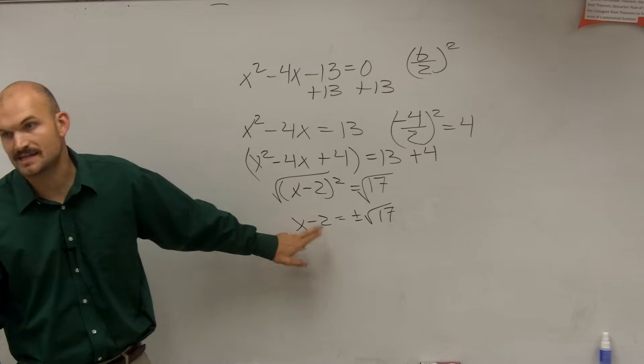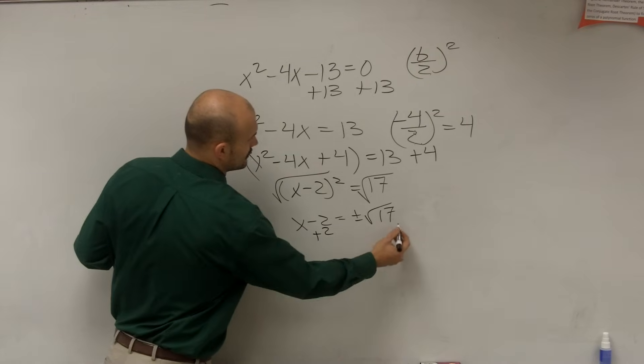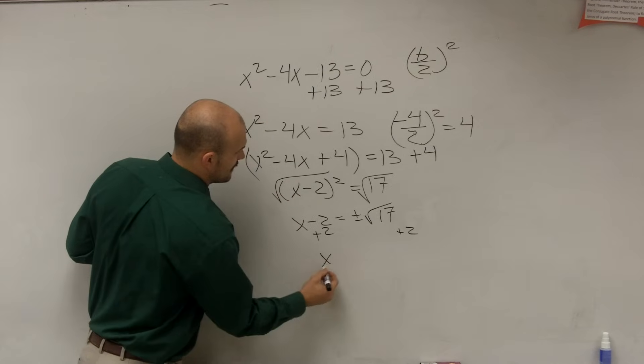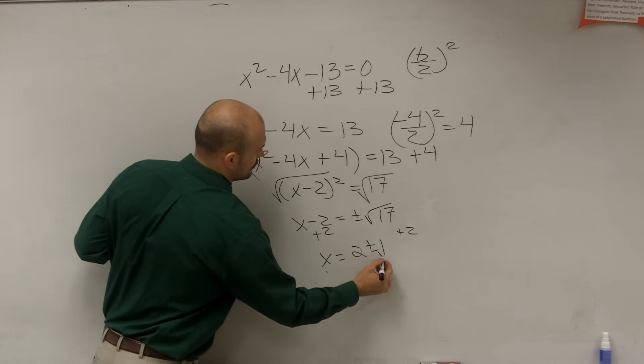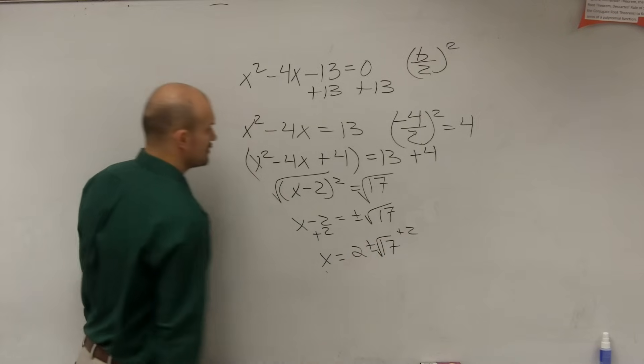Now, to get x by itself, I'm just going to add 2. So therefore, my final answer is x equals 2 plus or minus the square root of 17.